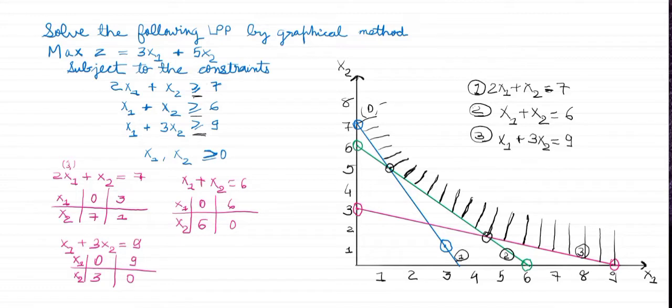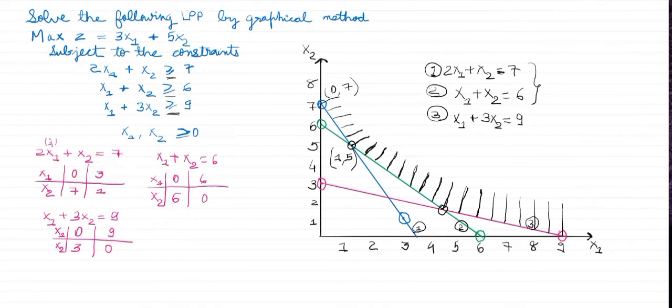The next thing is we'll give these points as a, b, c, d. And how we can find this 1, 5? You can solve these two equations: 2x1 plus x2 equals 7 and x1 plus x2 equals 6. Because this point is on the green line and the blue line. That's why we'll solve this equation to find this point. And on solving, I have used elimination, subtracted the equation 2 from the equation 1, and got this point as 1, 5.